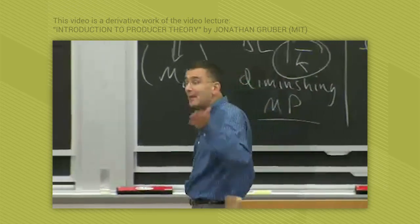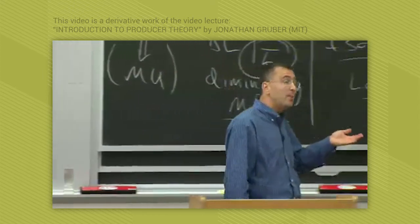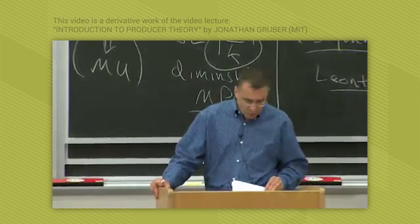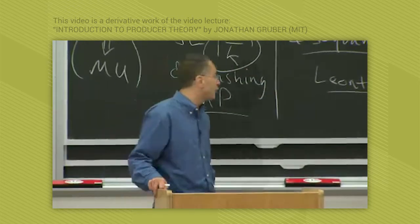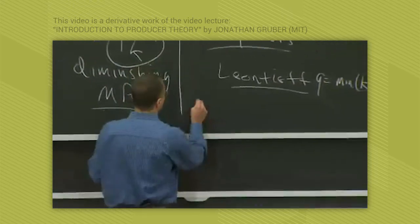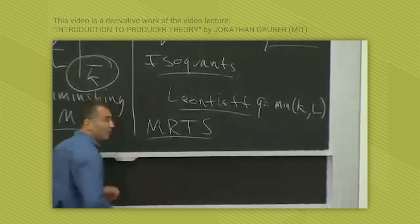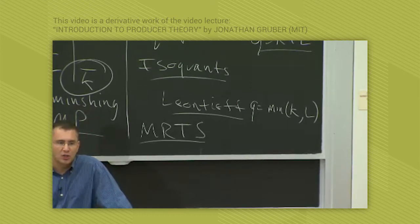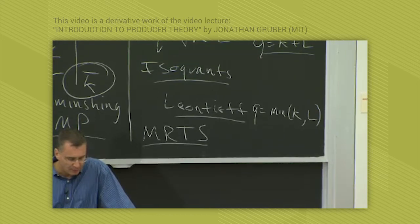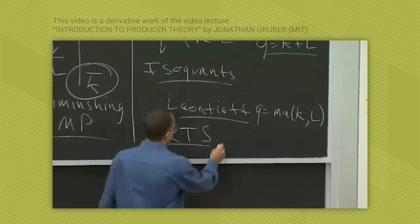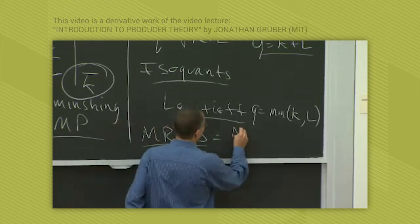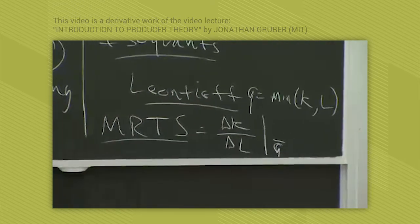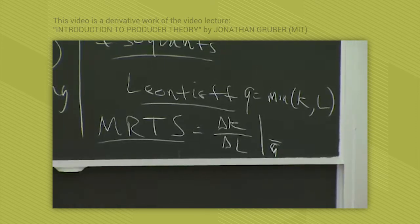In general, we'll be in between these extreme cases — there will be some substitutability, but inputs won't be perfectly substitutable. More generally, just as the slope of the indifference curve is the marginal rate of substitution, the slope of the isoquant is called the marginal rate of technical substitution (MRTS). The MRTS is the rate at which you can substitute one input for another in a production function, defined as ΔK/ΔL for a given Q̄ — the rate at which you can trade off K for L while holding output fixed.